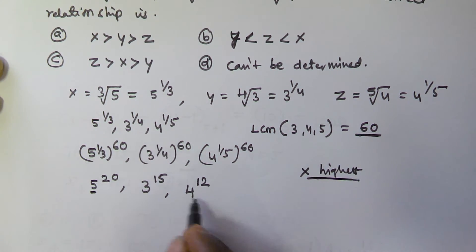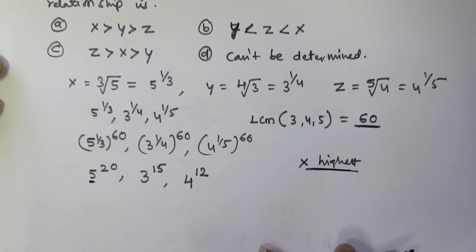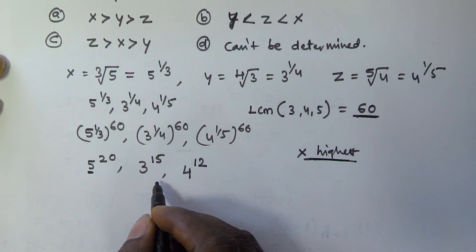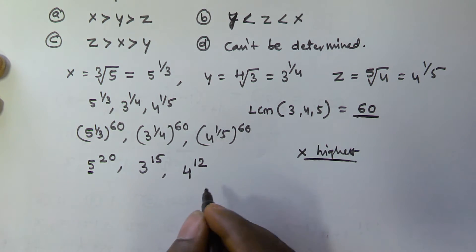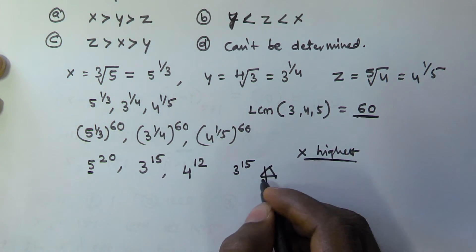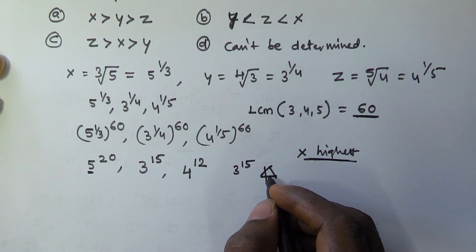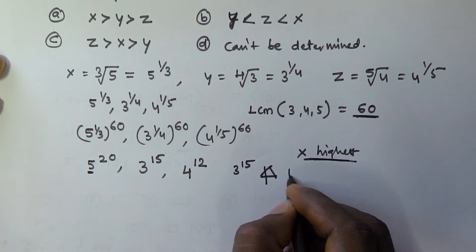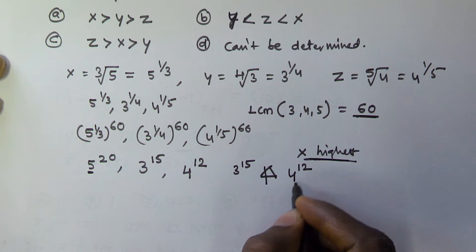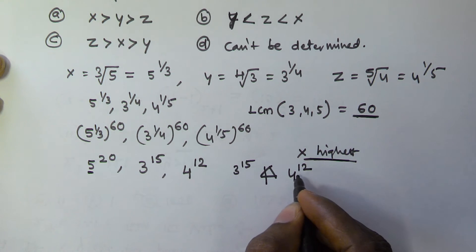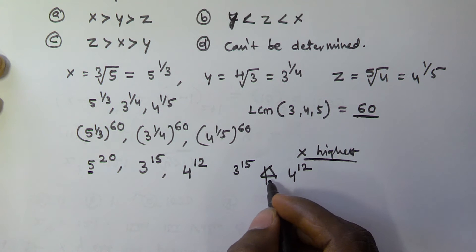From the remaining two we need to compare 3^15 and 4^12, and determine which is greater, lesser, or equal. This is called the trichotomy relation — this number may be less than, equal to, or greater than 4^12.